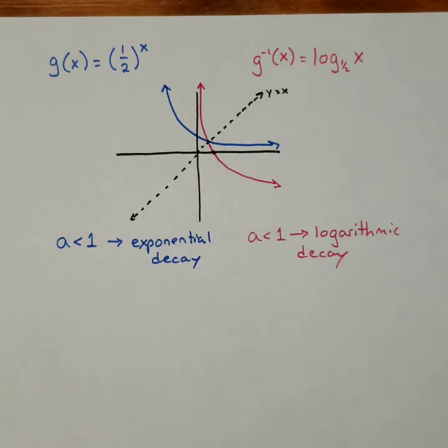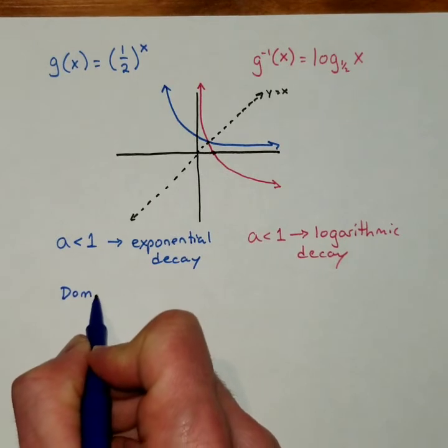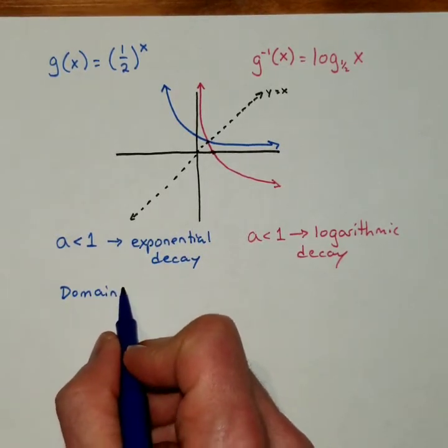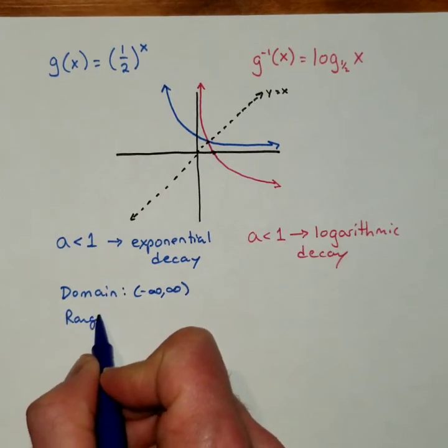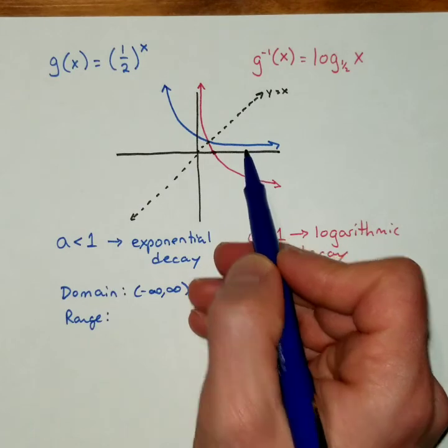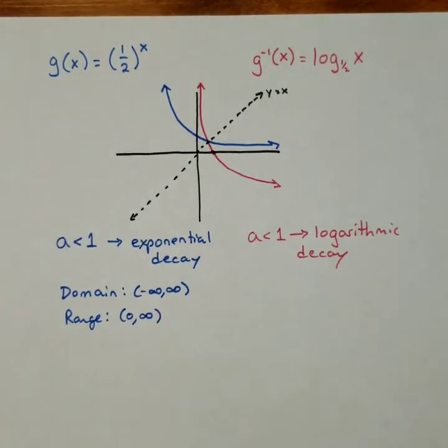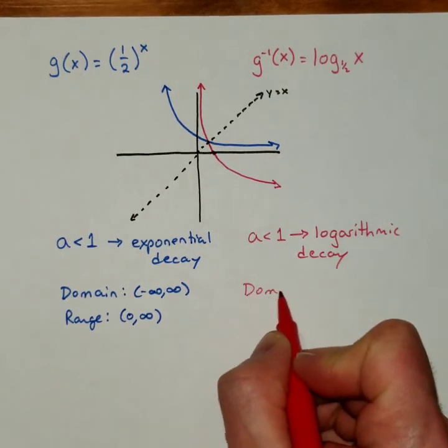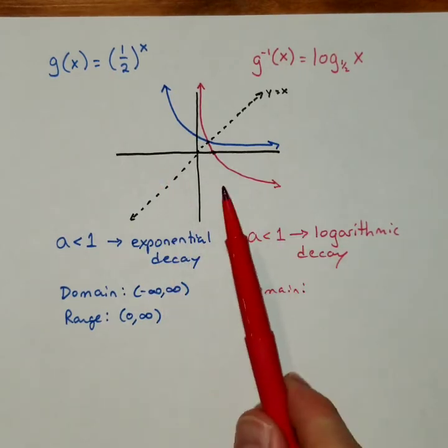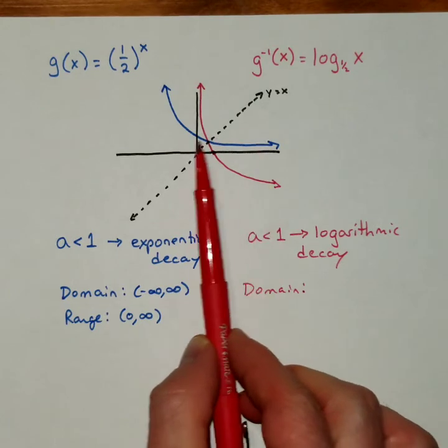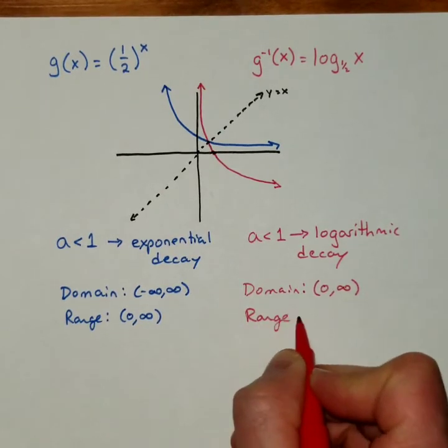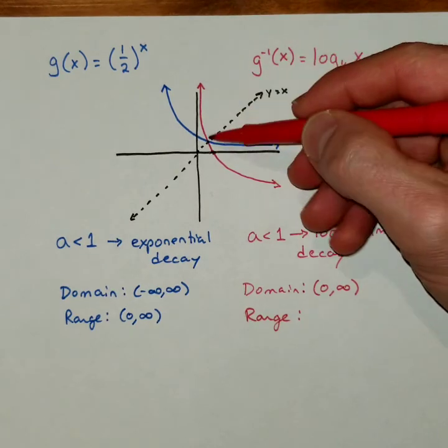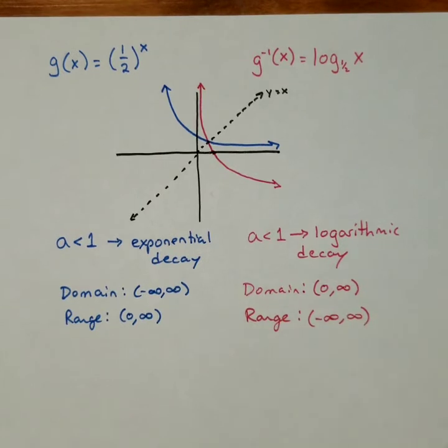So again the domains and ranges for these. I'll just do the domain in blue for the g of x. The domain there is going to be again all real numbers. And the range, well again it's all positive numbers, it's everything above the x axis. So 0 to infinity not including the 0. When I jump over to the inverse, the logarithm, the domain here is everything to the right of the y axis, but it never hits the y or goes left. So that's 0 to infinity. And the range is going to be all real numbers because the arrows go up indefinitely and down indefinitely. And you can see again how those domains and ranges interchange.